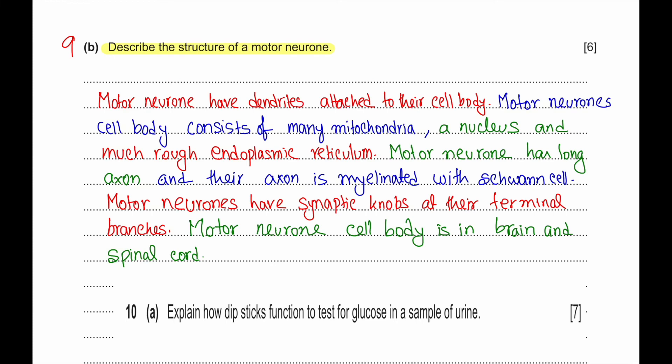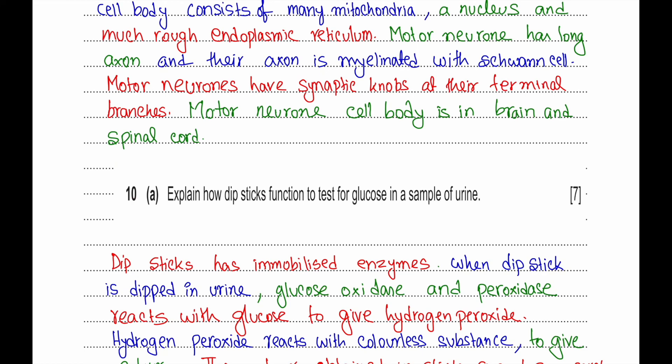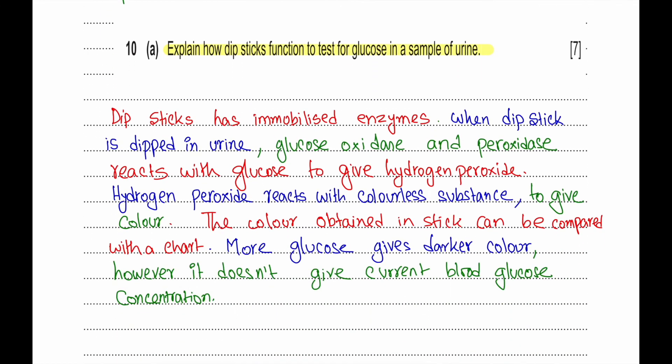Question 10a: Explain how dipstick function to test for glucose in a sample of urine. Dipsticks have immobilized enzymes. When dipped in urine, the immobilized enzyme glucose oxidase and peroxidase react with glucose. First, glucose oxidase reacts with glucose to give hydrogen peroxide, and then this hydrogen peroxide reacts with a colorless substance to give color. The color obtained in the stick can be compared with a chart. More glucose gives darker color, however it doesn't give current blood glucose concentration.